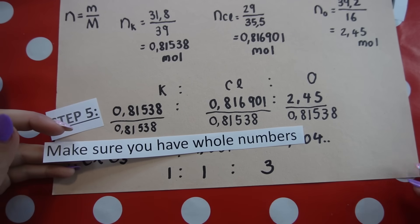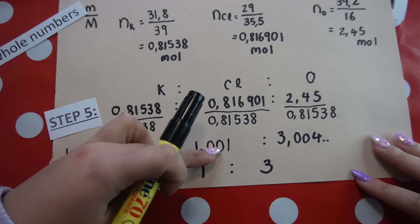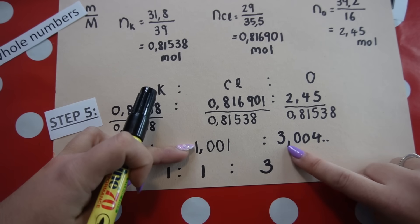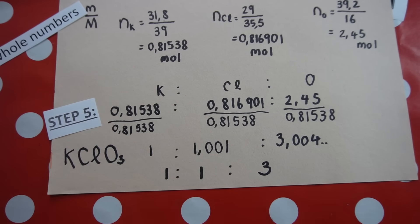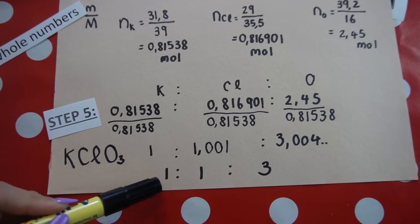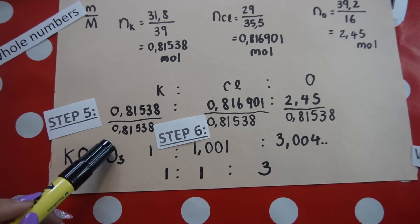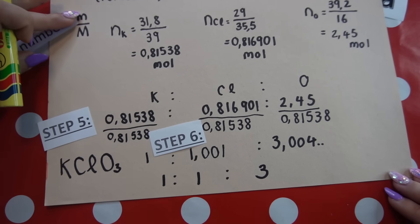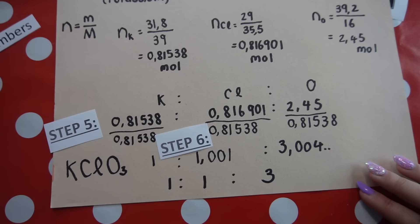Step five is to confirm you have whole numbers. We got 1, 1.001 (essentially 1), and 3.004 (essentially 3) — all close enough to whole numbers. Step six: write the empirical formula, which is KClO₃.